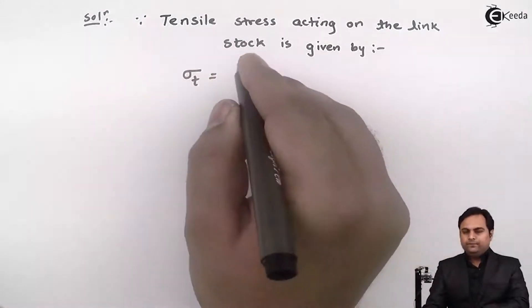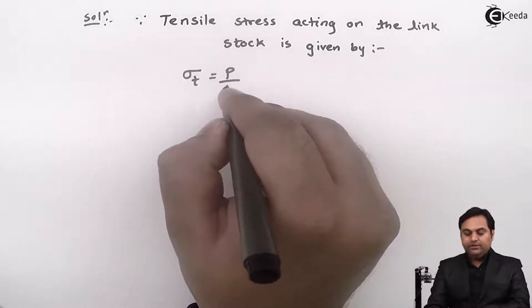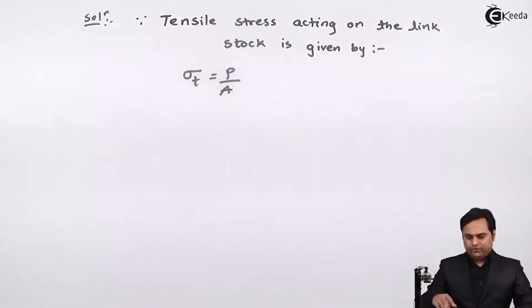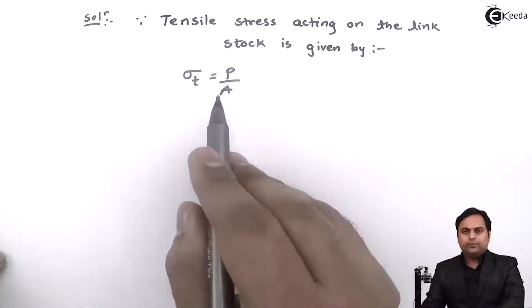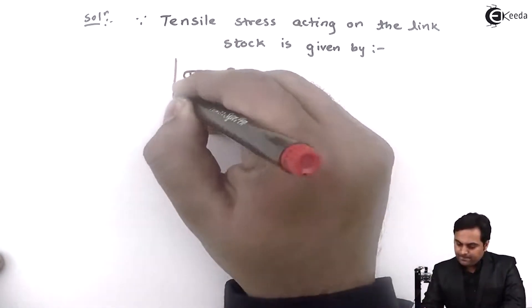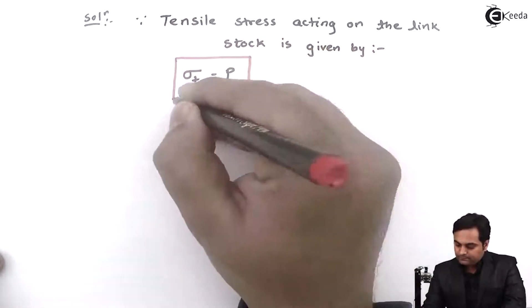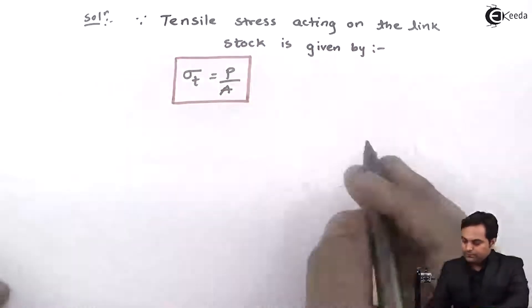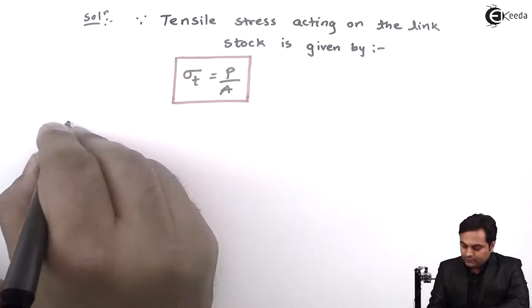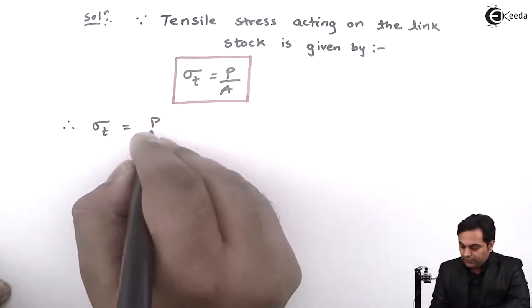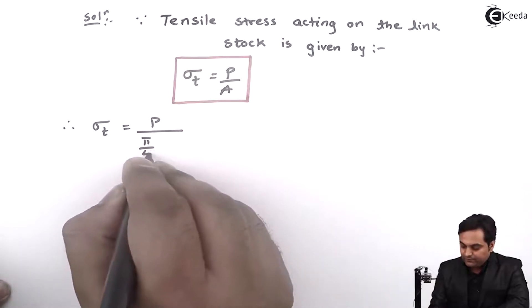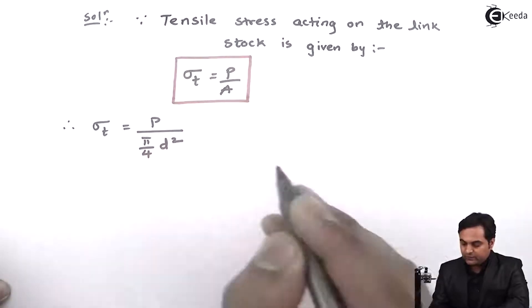Now since tensile stress is load upon area, therefore sigma t is equal to P upon area, which is pi by 4 d square.